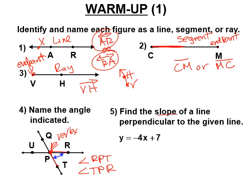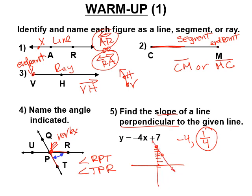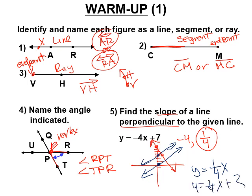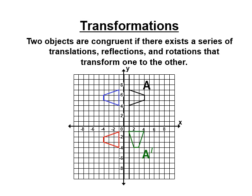Early in the year, we learned that the slopes of parallel lines are the same, and the slopes of perpendicular lines are the negative reciprocals. So if the slope here is negative four, you flip it over and make it its opposite — positive one-fourth. Any line that is perpendicular to it will have a slope of one-fourth. That was getting ready for some of the stuff coming in transformations.